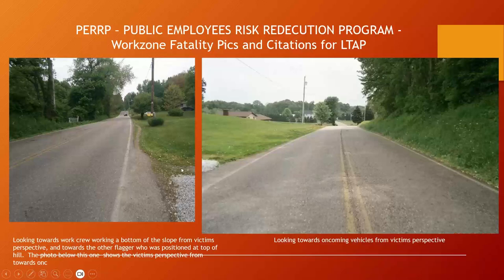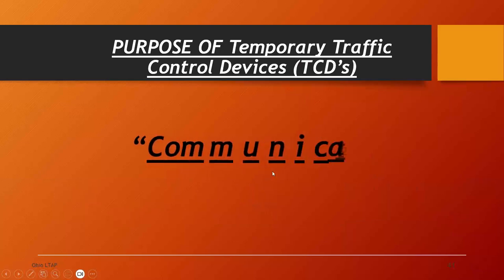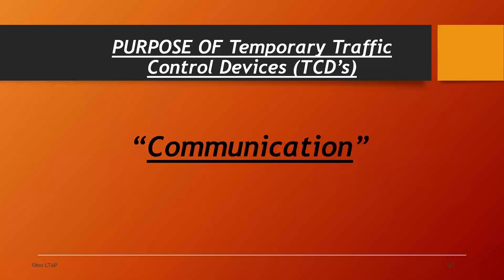We went over a lot in part one — the OMUTCD, the Temporary Traffic Control Manual, and how to find work zone resources online through the Ohio LTAP website and the ODOT Office of Roadway Engineering's page. Now let's continue on. Our next part covers temporary traffic control devices that we use in our work zones. The purpose of temporary traffic control devices: we use them to communicate with all of our road users — motorists, pedestrians, etc. They are the best way to communicate — we can't send out a mass text or email to let people know we're closing a lane.